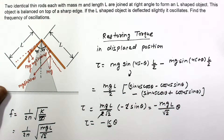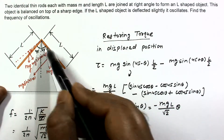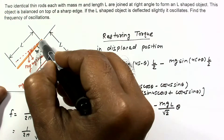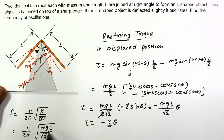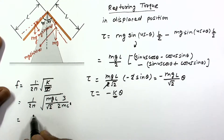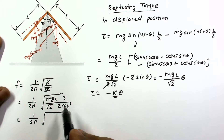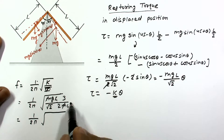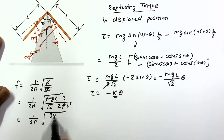The moment of inertia of one rod about this axis is ML²/3, and since there are two rods, I = 2ML²/3. Substituting these values, the final answer is f = (1/2π)·√(3g / (2√2·L)).